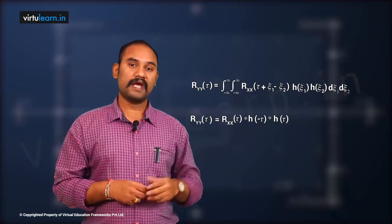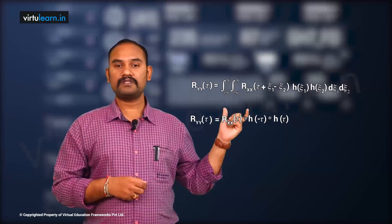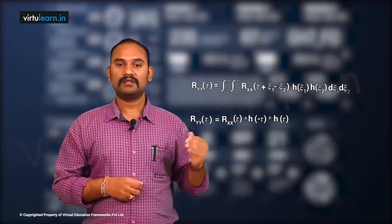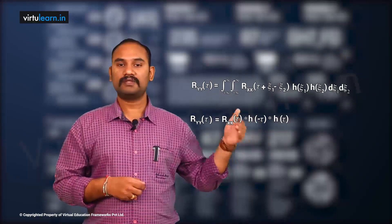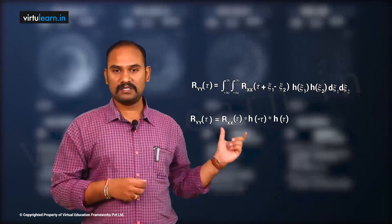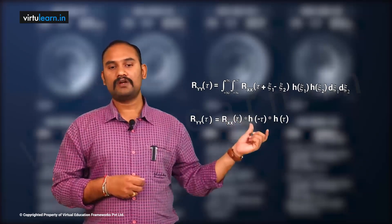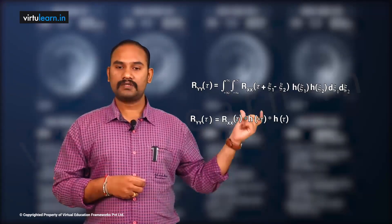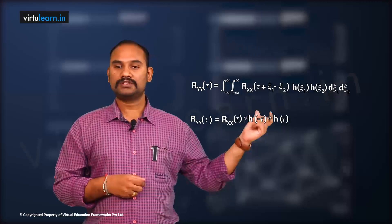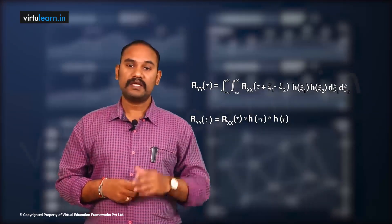This is recognized as a two-dimensional convolution. The ACF of the response is nothing but the two-dimensional convolution of the ACF of the input random process. In simpler mathematical terms: Ryy(τ) = Rxx(τ) ★ h(−τ) ★ h(τ), where ★ indicates convolution.